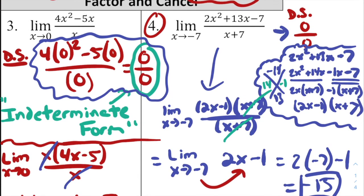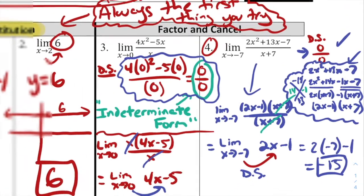A recap for number 4: we started with direct substitution, saw indeterminate form, were careful not to write that it equals 0/0, then factored using the X method, cancelled factors, and applied direct substitution again to get our final answer of −15.